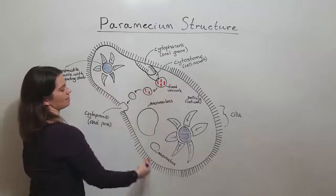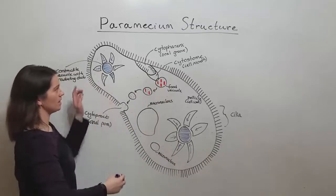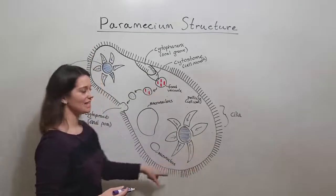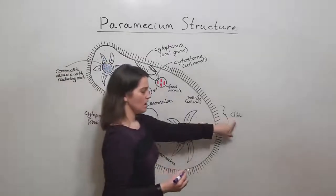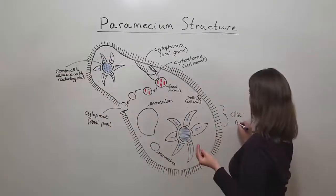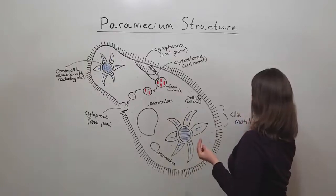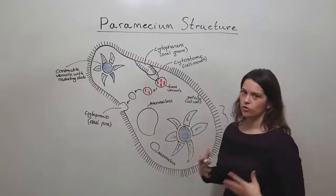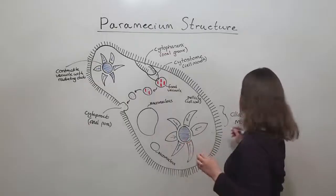So it has kind of this oval shape. It is surrounded by what are known as cilia. The cilia are used for two main purposes. The first one is motility, so locomotion, moving around, and also for food capture.